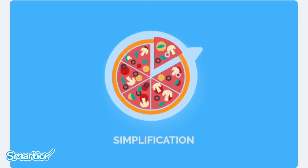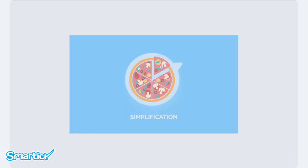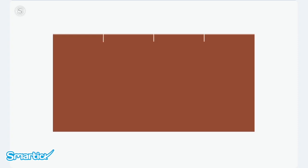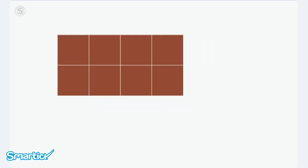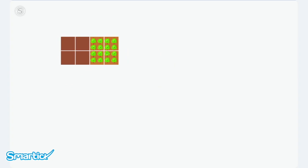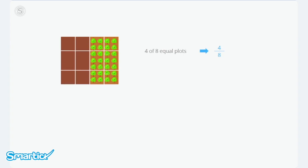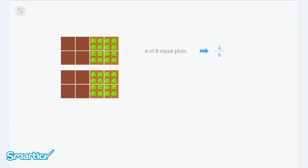Simplification. Eva's mother has an allotment. This allotment is divided into eight equal plots by fences. She wants to plant cauliflowers in half of them, so four of the eight equal plots. She realized it would be much easier to make the furrows if she removes some of the fences.